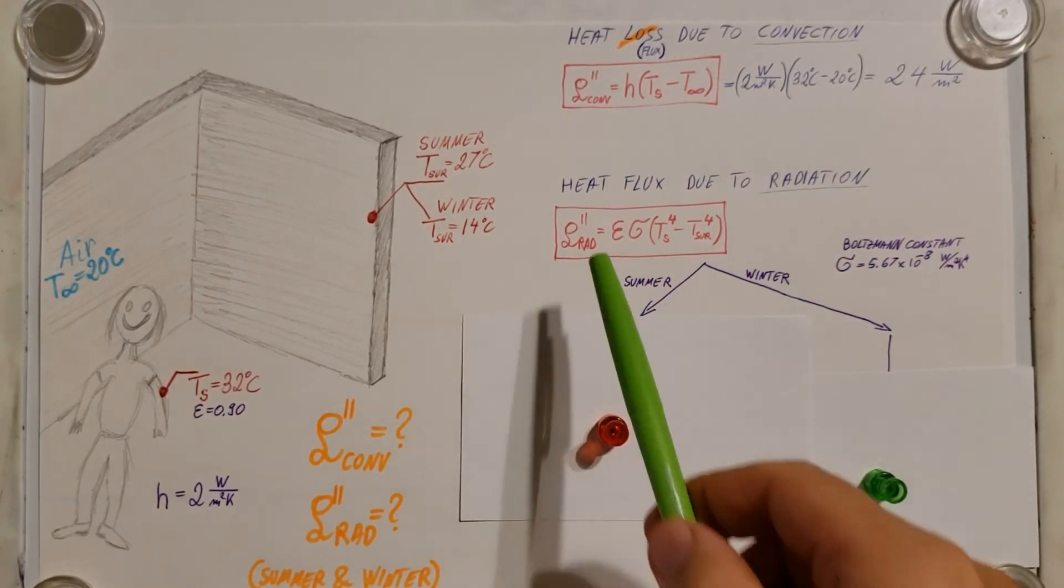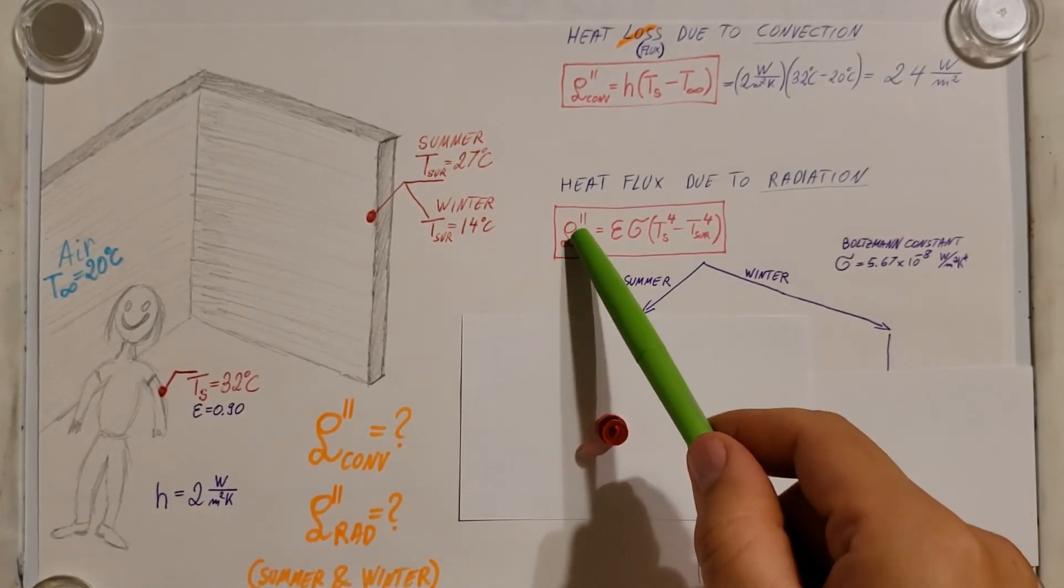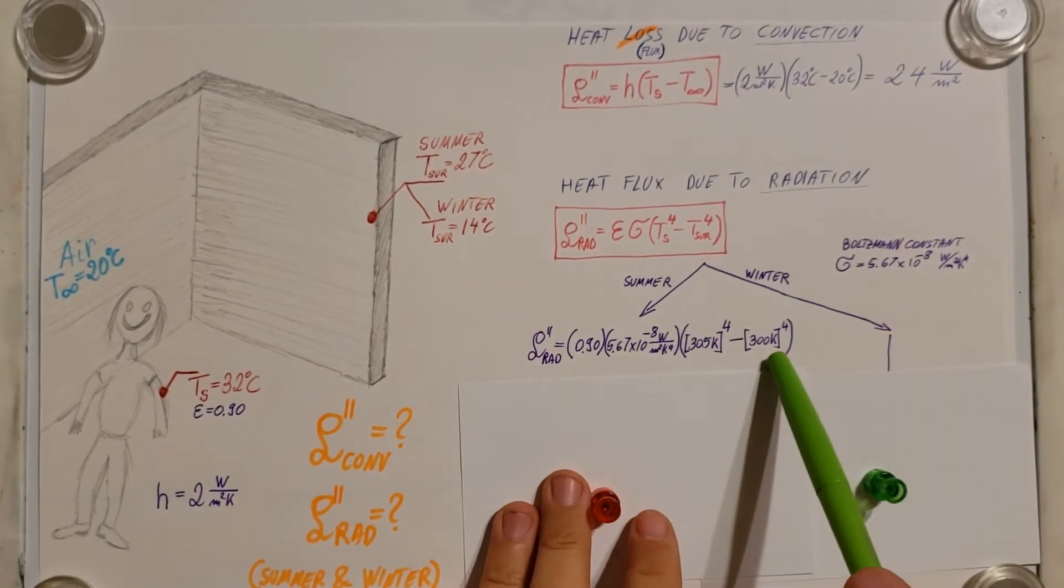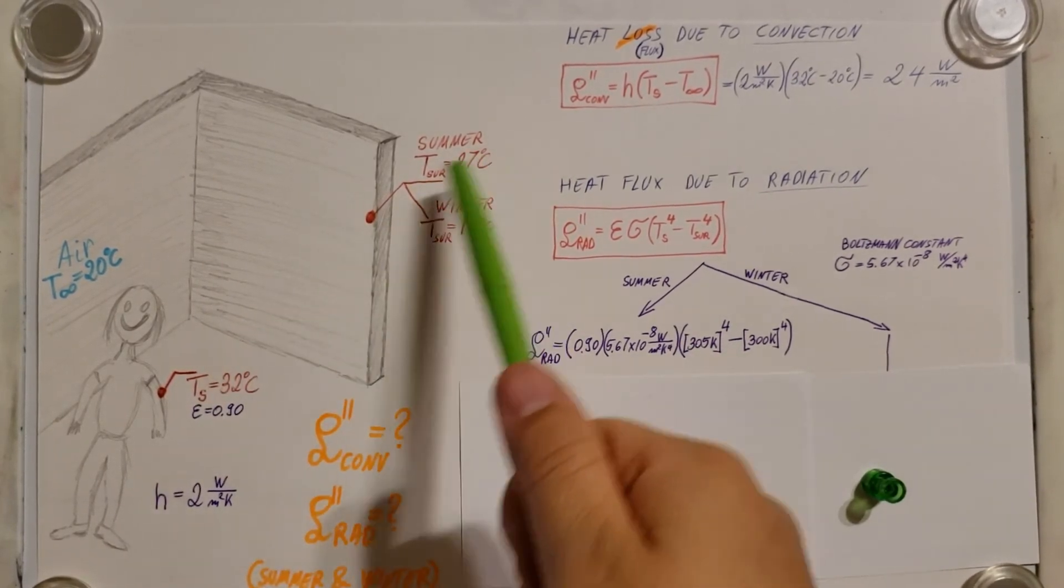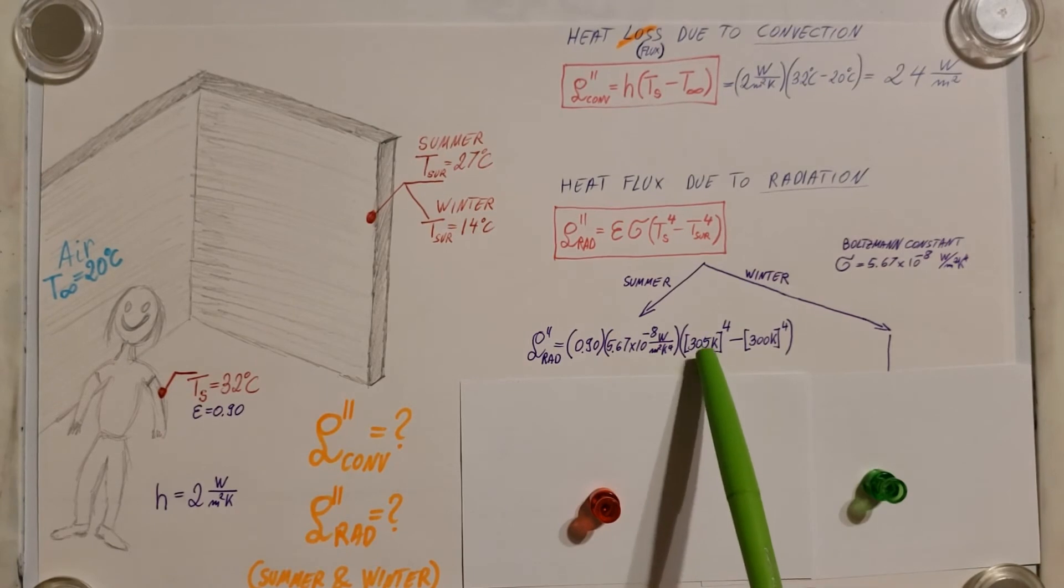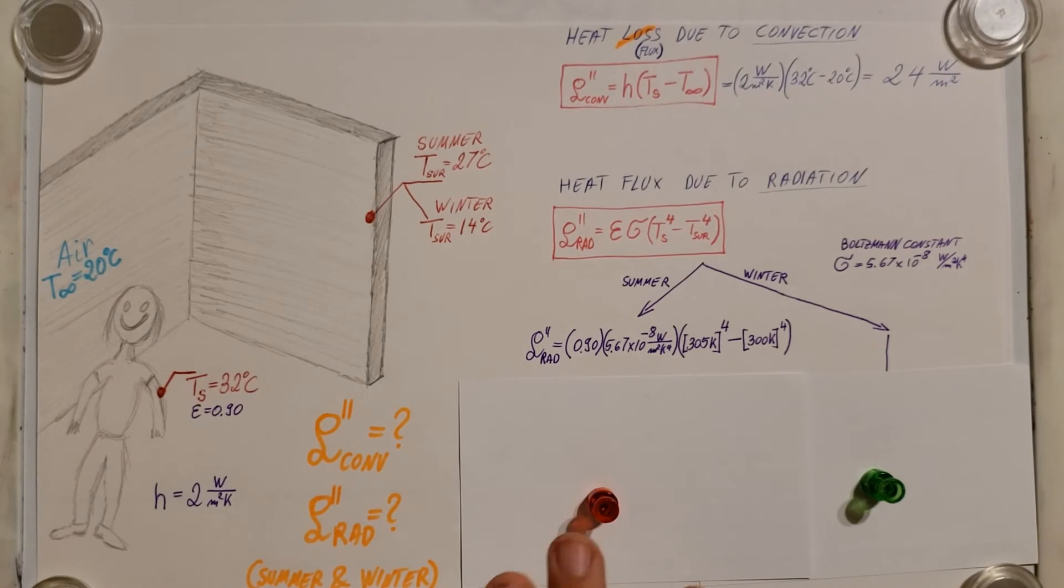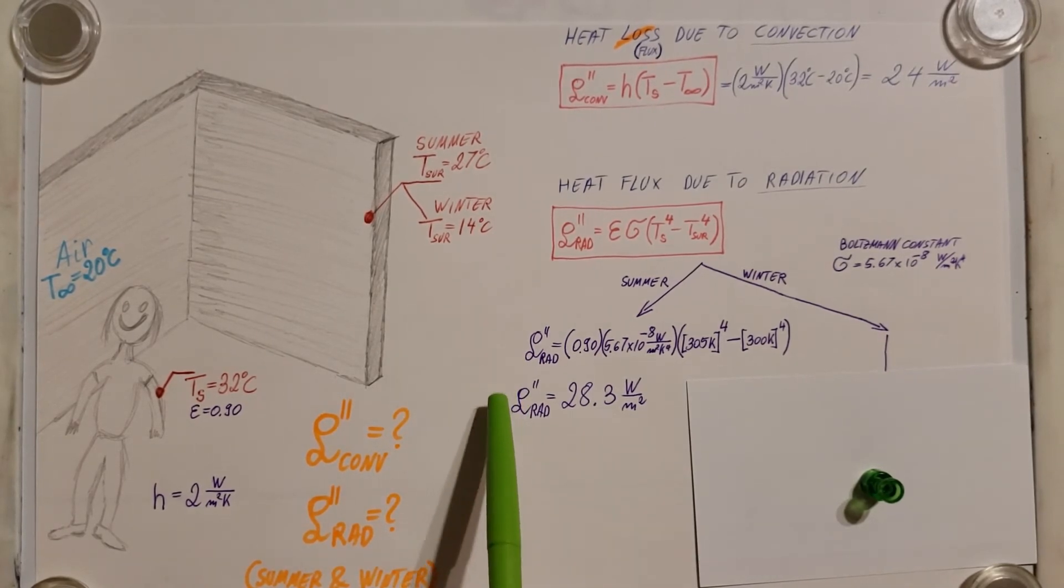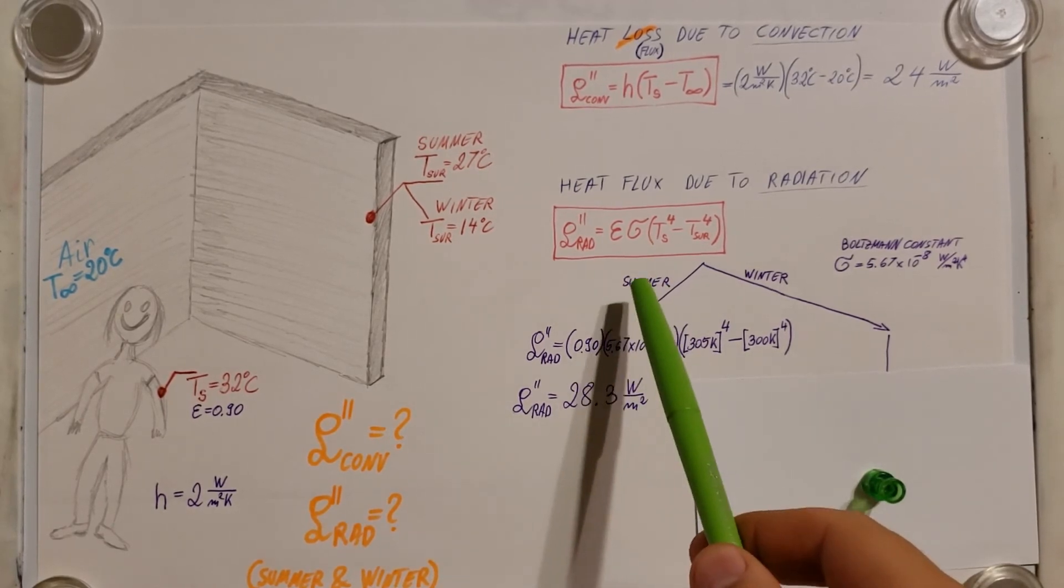Everything else, emissivity, we have 0.90 and both of these we have. So let's go ahead and calculate our flux. Here it is. I plugged everything in. Make sure you convert these Celsius that are given to Kelvin. This formula needs the values to be in Kelvin. Otherwise, you're going to get weird numbers. And after we calculate, we can see that due to radiation, our flux is 28.3 watts per meter square in the summer.